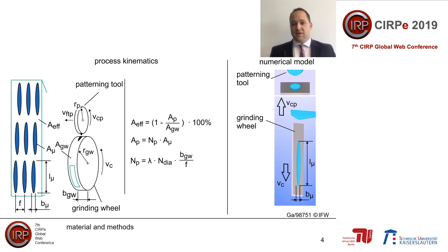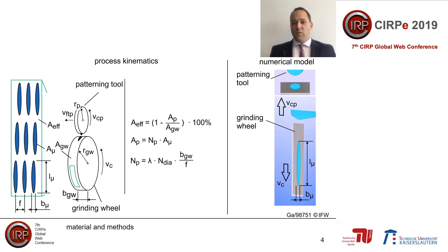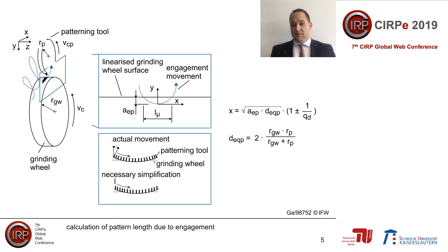The process design uses the established value of the effective contact area. This value can be calculated by the ideal circumferential area reduced by the area of the patterns. As the number of patterns can be adjusted by the process setting parameters, the calculation of the resulting area of one pattern is of interest to the process design. The area can be determined by the length and the width of a pattern. The length can be calculated using a linearized grinding wheel surface, compensated by an equivalent patterning tool diameter, which is a common calculation in dressing processes. The width can be calculated using another simplification: the movement is calculated without a change in angle between the patterning tool and the grinding wheel surface.